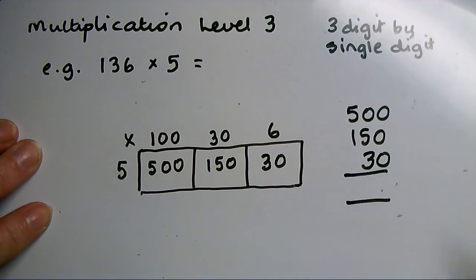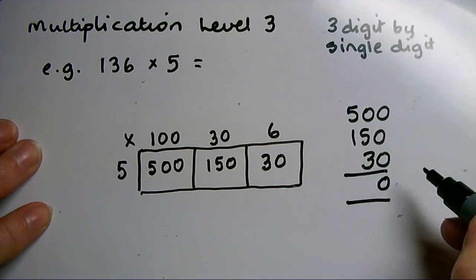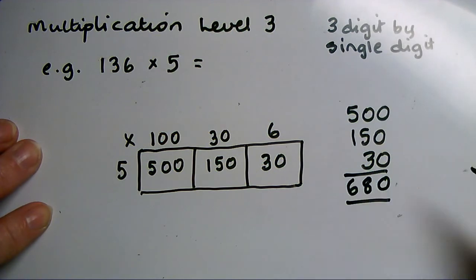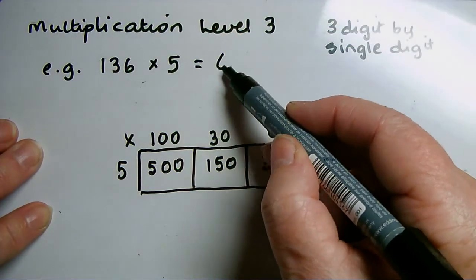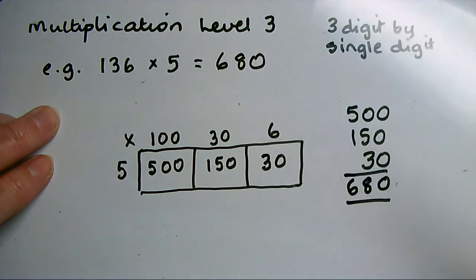Then I'm adding those together: zero, no units, eight tens, six hundreds. So my final answer, 680.